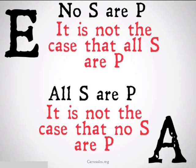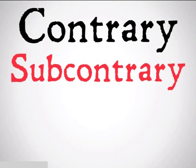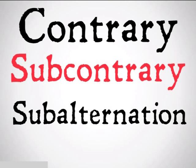It's important to note, however, that both of these statements could be false, so we can't do these arguments backwards. I'll take a look at that in illicit contrary. That was contrary. Next up is subcontrary followed by subalternation.